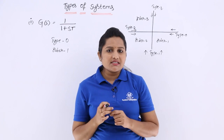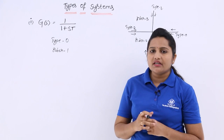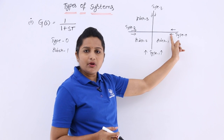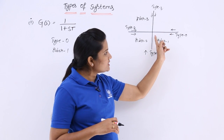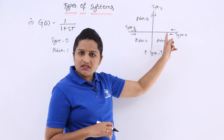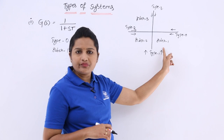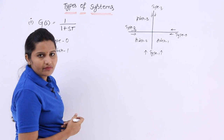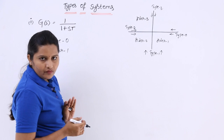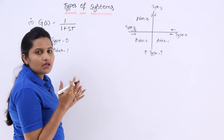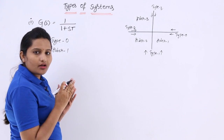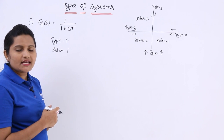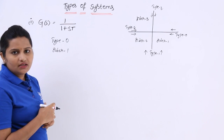Type of the system indicates where the plot needs to start, and order of the system indicates where the plot needs to end. For type 0 and order 1, the plot starts and ends in the same coordinate. The polar plot or Nyquist plot is drawn by taking the magnitude of the sinusoidal transfer function versus the phase angle of the transfer function.